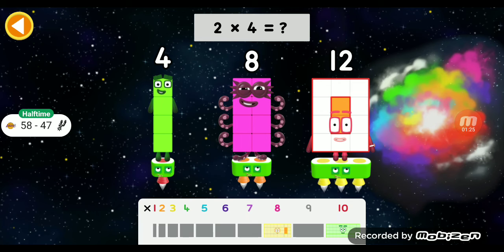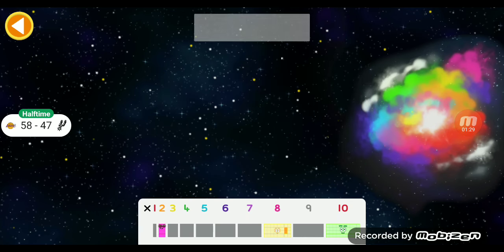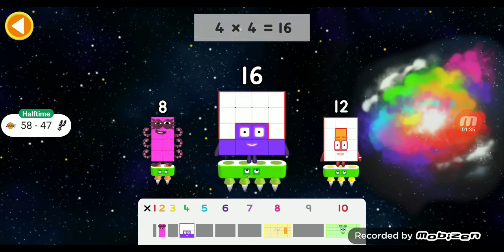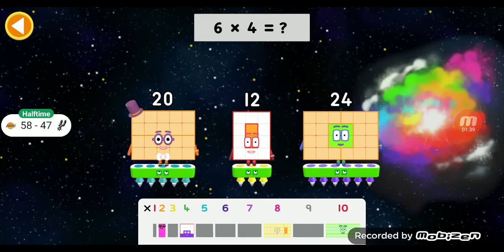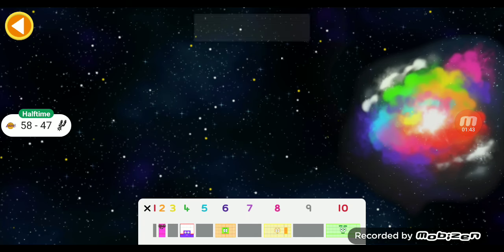2 times 4 equals 8. 8. 4 times 4 equals 16. 16. 6 times 4 equals 24. 24.